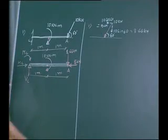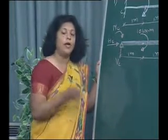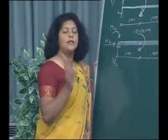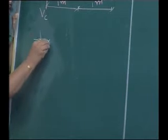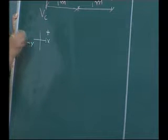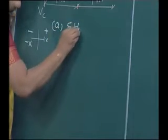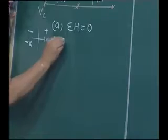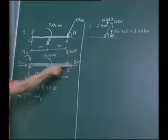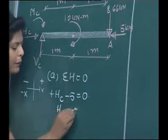After drawing the free body diagram, we apply our conditions of equilibrium. The first condition is sigma H equals 0 — algebraic summation of all horizontal forces. If the force moves toward the positive x-axis it is positive; negative x-axis is negative. We can see H_C is moving toward positive x-axis, so it is plus H_C. The 5 kilo Newton force moves toward negative x-axis, so minus 5 equals 0. Therefore H_C equals 5 kilo Newtons.